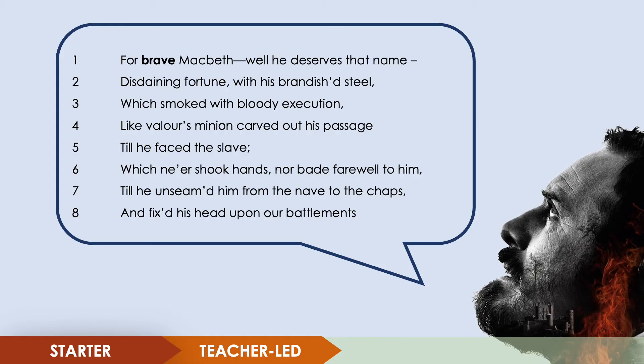Shakespearean language can be difficult to decipher and translate into modern English, so let's do that now. In this quotation a captain is explaining to King Duncan all of Macbeth's brave deeds. Line one: 'For brave Macbeth — well he deserves that name.' The captain is praising Macbeth's bravery and suggests he deserves the name 'brave Macbeth.' Line two: 'Disdaining fortune, with his brandished steel.' This describes Macbeth laughing in disregard of his own safety, while also implying a prowess or skill with a sword.